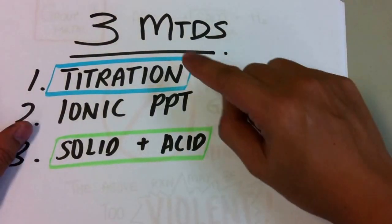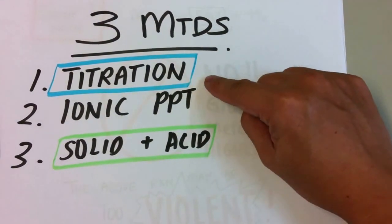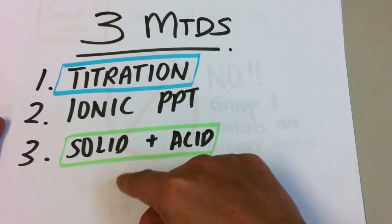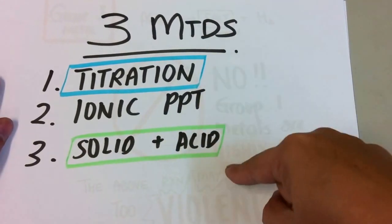The three methods are, in general, there are three methods. They are titration, ionic precipitation, and adding excess solid to acid. So these are the three.